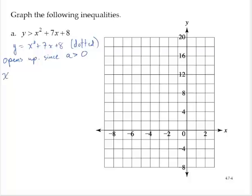The x-coordinate of the vertex would be given by negative 7 over 2 times 1, since our a coefficient is 1. And so that's negative 7 halves, or negative 3.5 if you want to use decimals.